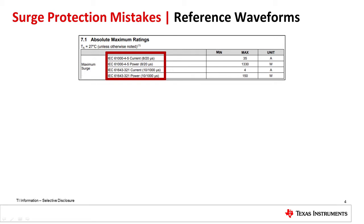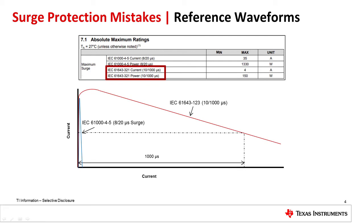Commonly, TVS diodes are specified in reference to a waveform with a 10 microsecond rise time and a 1000 microsecond half length. Due to the much longer length of the 1000 microsecond pulse, the peak current for this waveform will be much lower than the peak current for the IEC 61000-4-5 pulse. Because of this, the specified IPP and V-clamp are not applicable during the 20 microsecond IEC 61000-4-5 test.